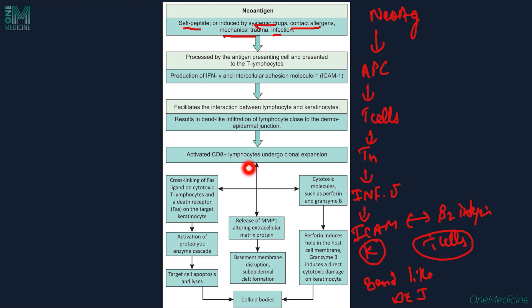Activated CD8+ T-cells undergo clonal proliferation. Along with NK cells, they bring about keratinocyte necrosis by two pathways. The first involves cross-linking of Fas ligand from cytotoxic T-cells with the Fas death receptor on the keratinocyte, activating a proteolytic enzyme cascade causing keratinocyte apoptosis and lysis, forming colloid bodies — which are degenerated keratinocytes. The second mechanism is cytotoxic molecule release such as perforins and granzymes: perforins induce holes in the host cell membrane and granzymes cause direct cytotoxic effects. Together they lead to colloid body formation. There is also basement membrane disruption and sub-epidermal cleft formation in LP.